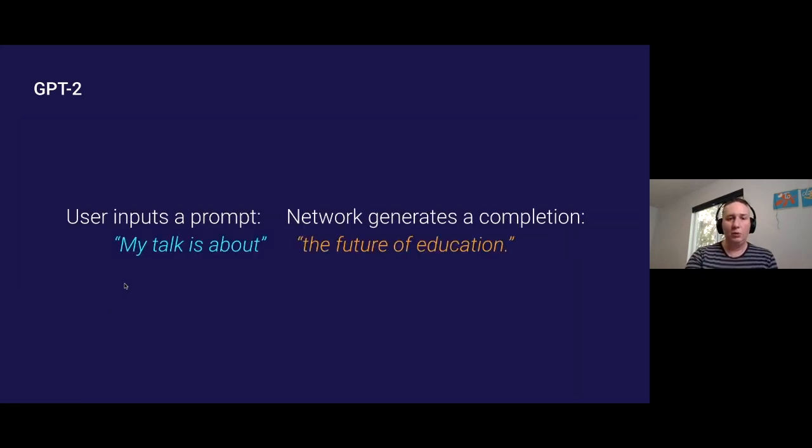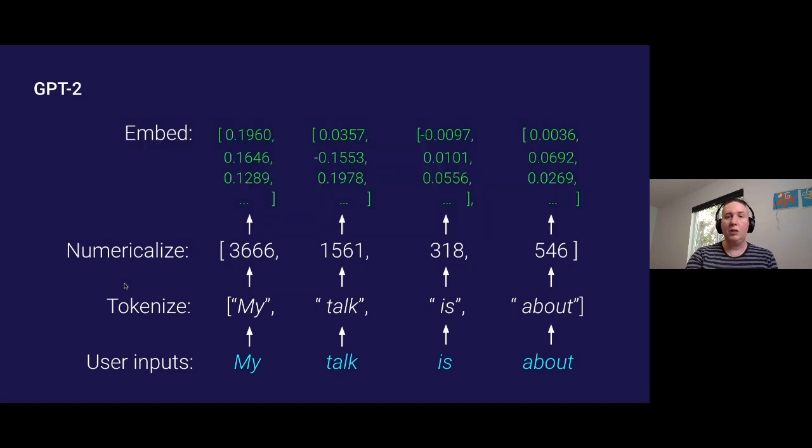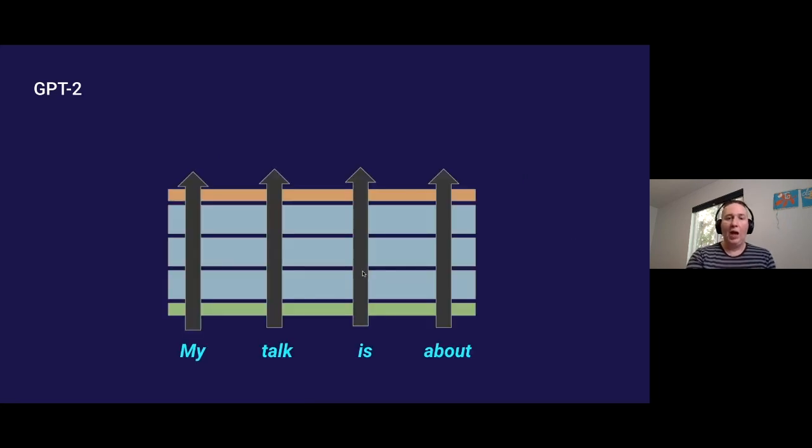These tokens get converted into vectors and the word 'my' always converts into this vector here and 'talk' with a space in front of it always converts into this vector. So I end up with these four vectors that get fed into GPT-2 and they flow through the network along these positions. So if I put four tokens in, I get four tokens out. In this particular diagram, there's four positions flowing through it.